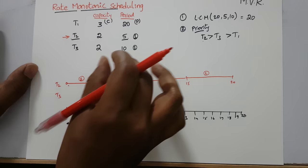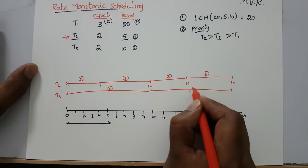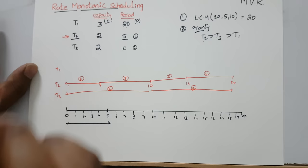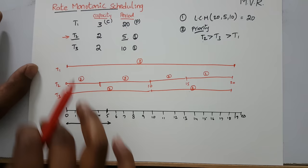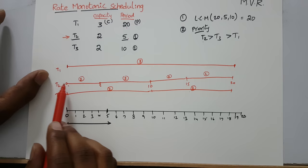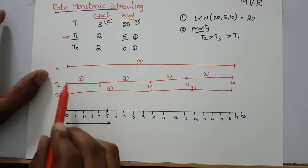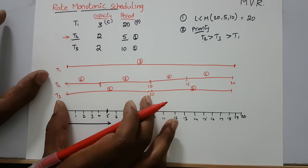For T3, for every 10 units it has to execute 2 times. For T1, for every 20 units it has to execute 3 units of time. So in the full 20-unit schedule, T1 will execute only 3 units total, T2 will execute 2 units in every 5-unit interval — so 2 from 0-5, 2 from 5-10, 2 from 10-15, and 2 from 15-20 — and T3 will execute 2 units in every 10-unit interval.